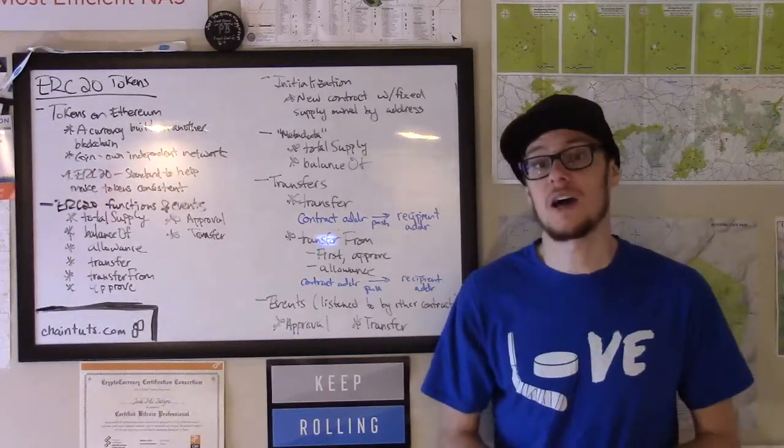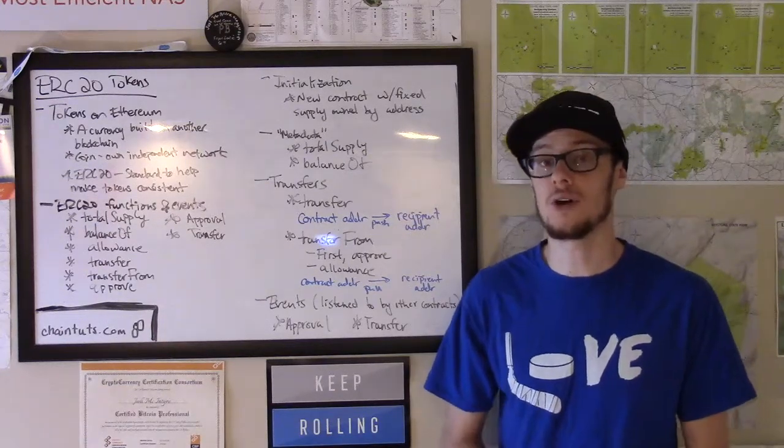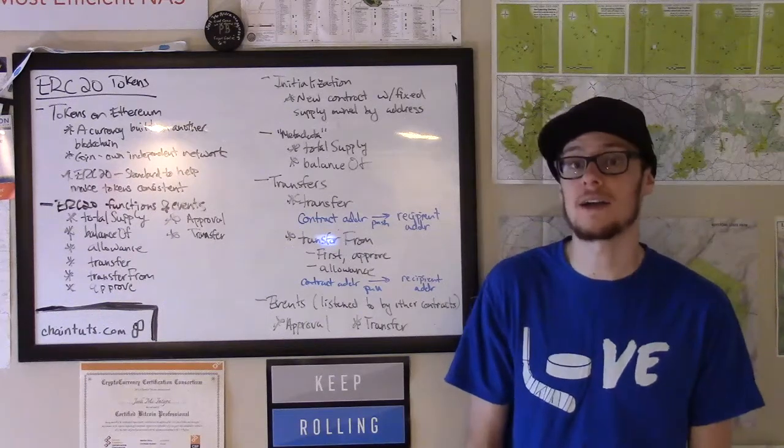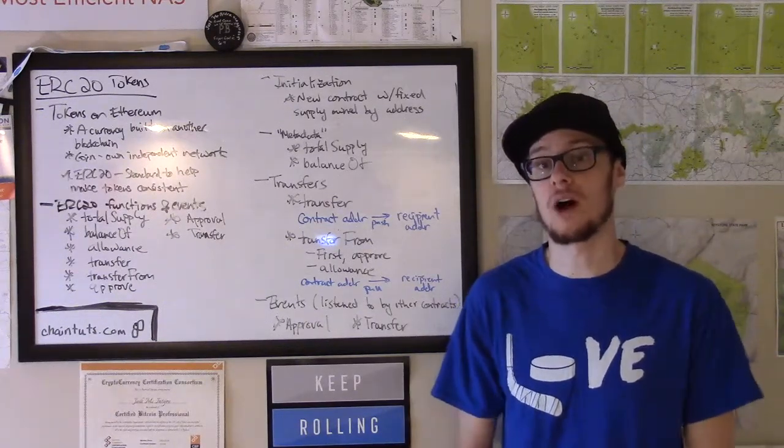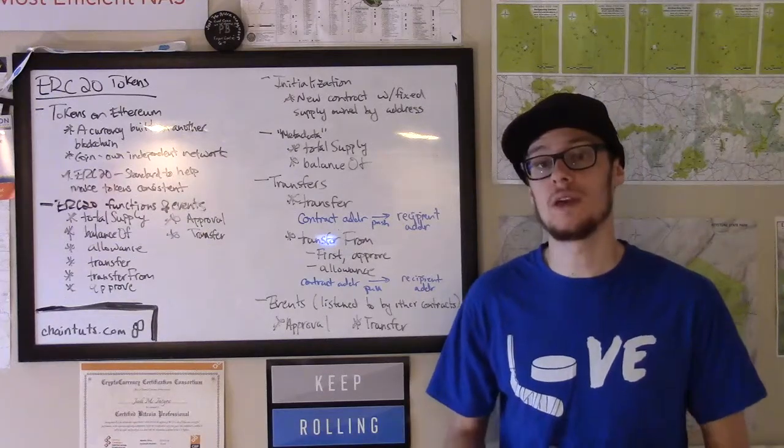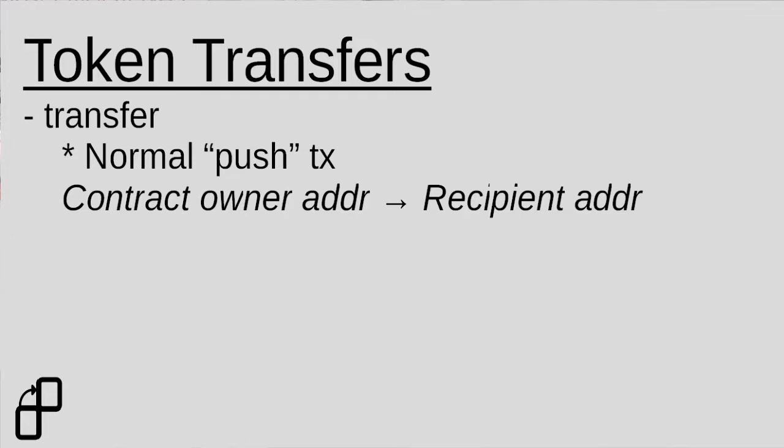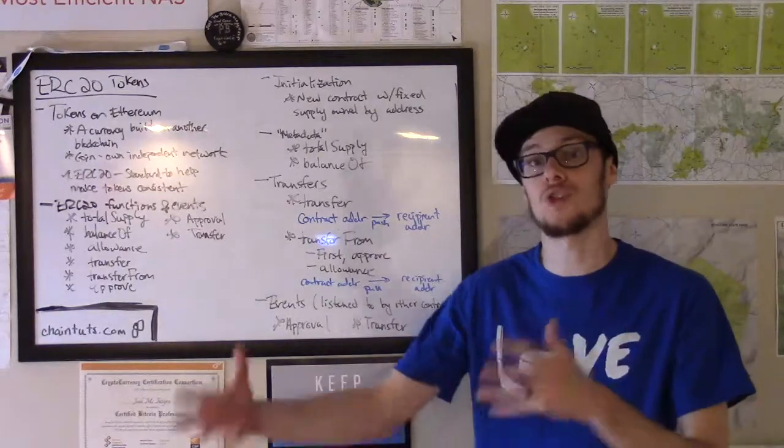Now there are two different types of transfers that can occur with ERC20 standard tokens. Remember that with most fixed supply contracts, the contract address, the original creator of the contract, owns the initial amount of tokens. So there is a simple transfer function where the contract address can send some amount of tokens to the recipient address. And this behaves like a typical cryptocurrency transaction that's a push transaction.